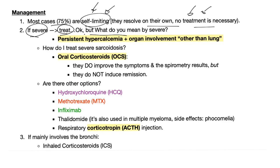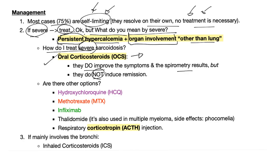What do I mean by severe? Persistent hypercalcemia plus organ involvement other than the lung, because sarcoidosis will always involve the lung — when you see another organ involved, this is getting ugly. Treatment for severe sarcoidosis: oral corticosteroids. They improve symptoms and spirometry results but do not induce remission. Other options include hydroxychloroquine, methotrexate, infliximab, thalidomide, and corticotropin (ACTH injection). If sarcoidosis only involves the bronchi, you can use inhaled corticosteroids rather than oral.